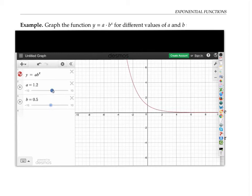So a changes the y-intercept, and b changes the steepness of the graph and whether it's increasing for b values bigger than one and decreasing for values of b less than one.